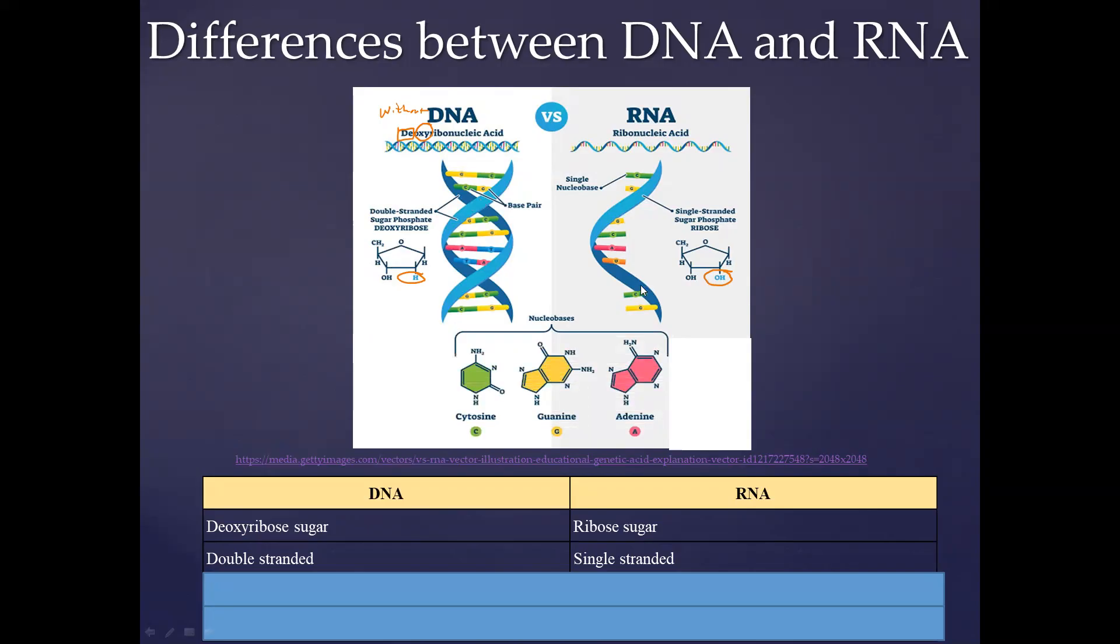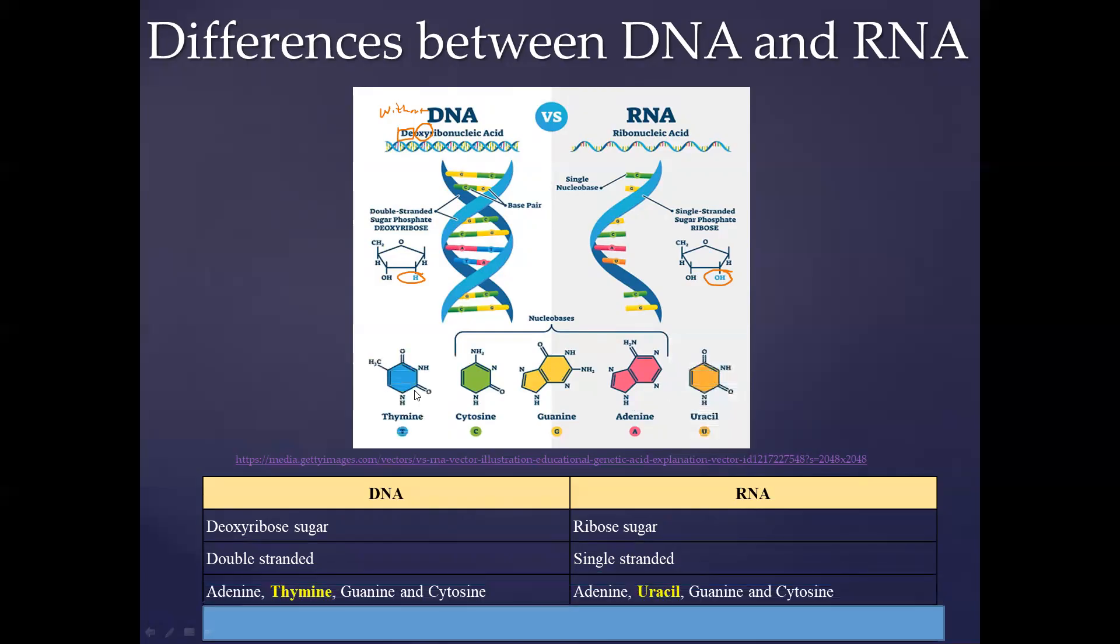Both of these molecules are made up of nucleotides. These are the building blocks of nucleic acids. However, the specific types of nucleotides differ. In DNA, we have cytosine and guanine, that's common to both DNA and RNA. But in DNA, the adenine joins with T for thymine, whereas in RNA, the adenine joins with U for uracil.